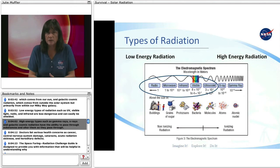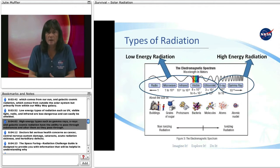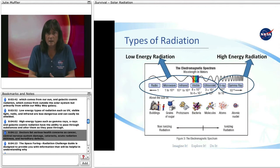High energy types such as gamma rays, X-rays, and galactic cosmic radiation have the ability to pass through substances and alter them as they pass through. Doctors list serious health concerns as cancer, central nervous system damage, cataracts, acute radiation sickness, and hereditary defects.